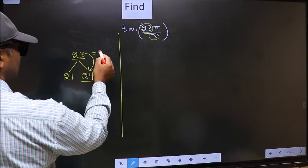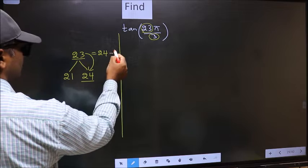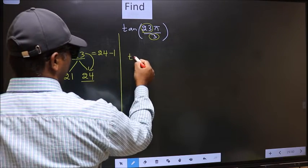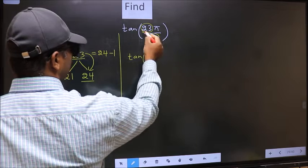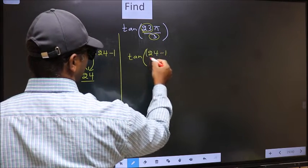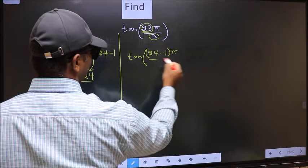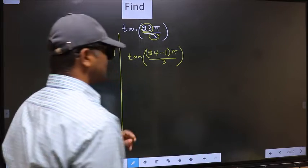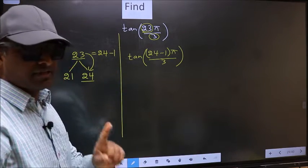So now 23 should be written as 24 minus 1. This will become tan of (24 minus 1) π by 3. This is your step 1.